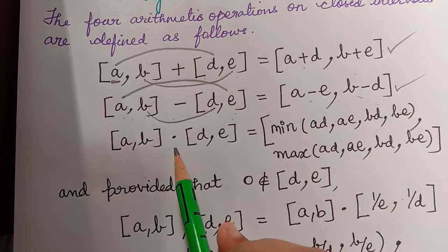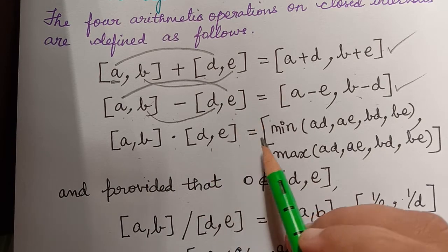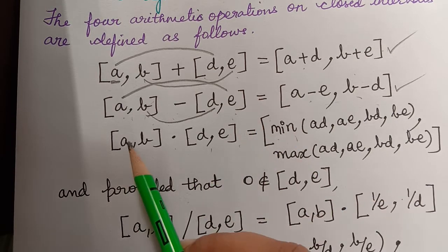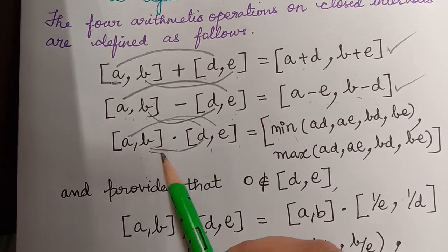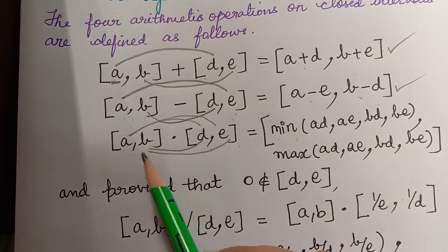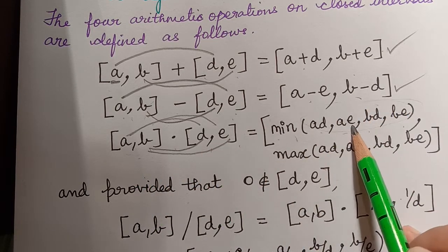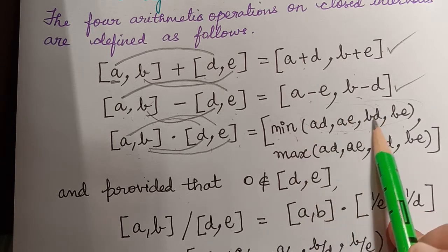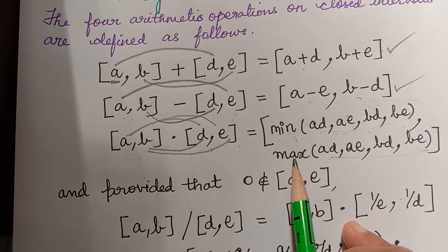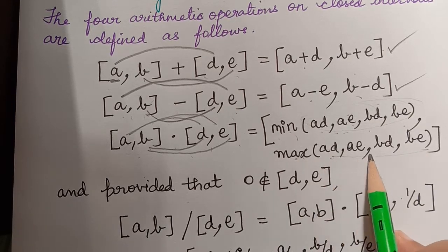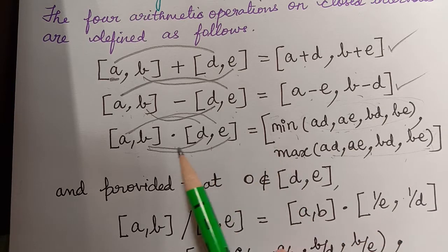For multiplication, we take the minimum of {ad, ae, bd, be}. We multiply all combinations and whichever value is minimum goes in the left bound, and the maximum goes in the right bound. The result is the closed interval [min(ad,ae,bd,be), max(ad,ae,bd,be)].